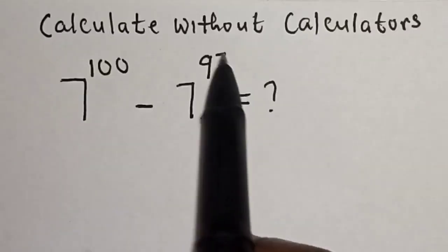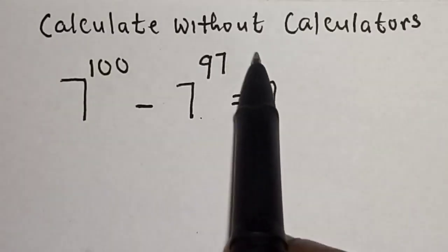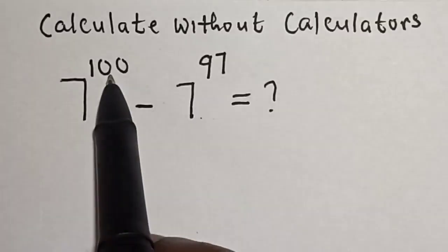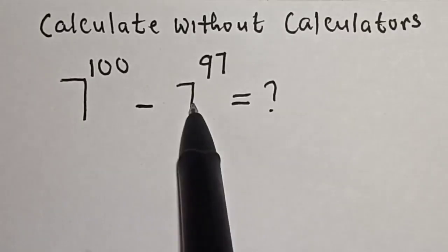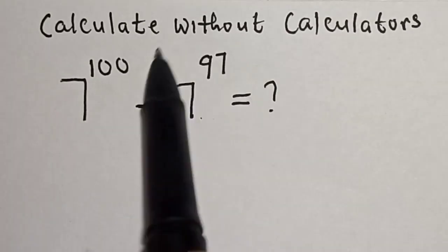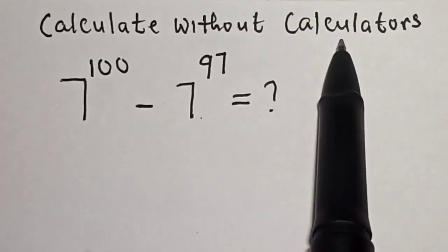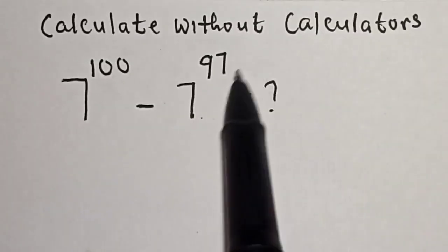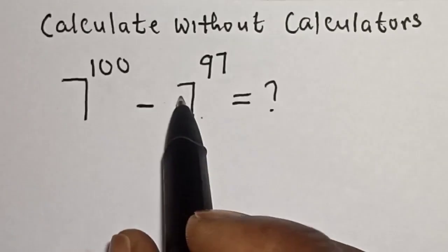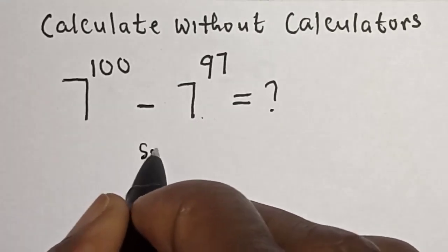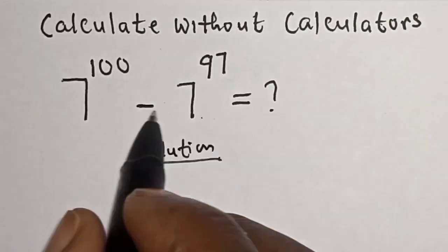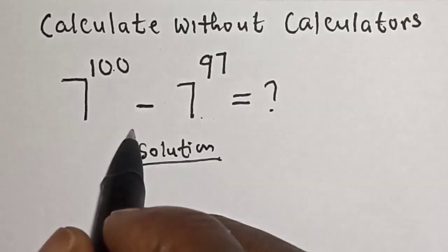Hi everyone, welcome to my class. In this class we want to evaluate this math problem: 7 raised to power 100 minus 7 raised to power 97 — what is this equal to? We want to calculate this without using a calculator. But before we proceed, please don't forget to like, share, comment, and subscribe.